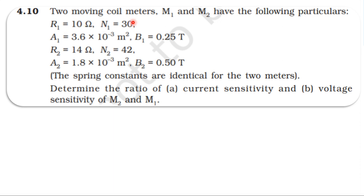First meter: resistance 10 ohm, number of turns 30, area of the coil 3.6 into 10 power minus 3 meter squared, magnetic induction B1 = 0.25 Tesla.